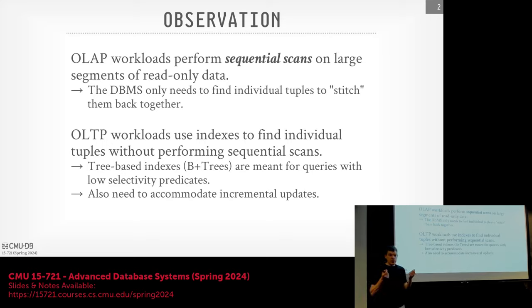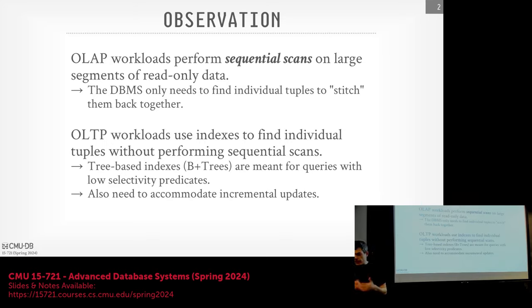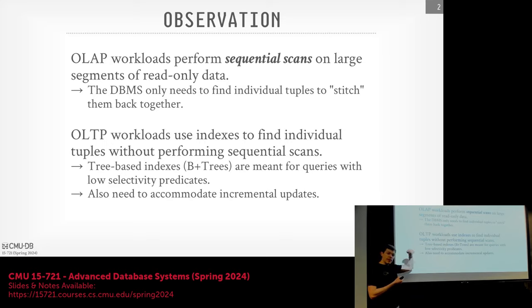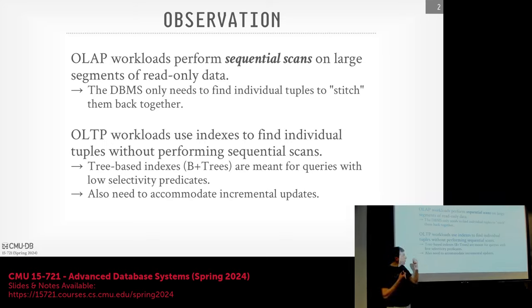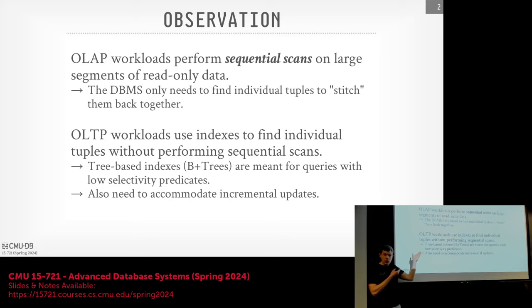At the end, when we need to produce a final result, we may need to find the other attributes for a given tuple and put things back together. We're not going to want to use a B+ tree or other data structure like a hash table for that. Just to contrast: in an OLTP environment, workloads care about finding individual things, like go find Andy's orders or Andy's bank account. In that world, we want to use something like a B+ tree to find those things efficiently. Because OLTP systems also need to support inserts, updates, and deletes, these data structures have to be dynamic — they automatically resize themselves as we insert new data. We don't care about any of those things in our world.